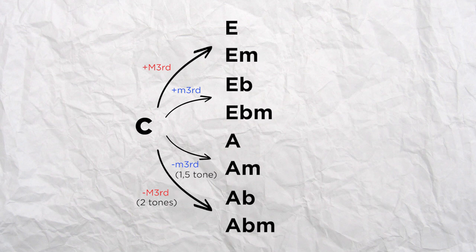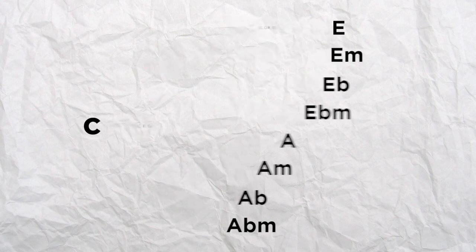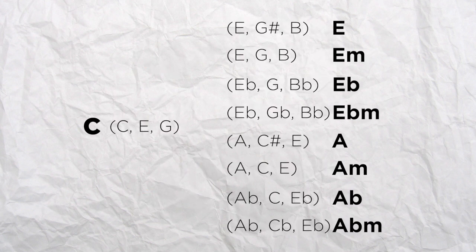Then any of these chords can be either a major chord or a minor chord, so that gives us 8 different possibilities. Now let's take a closer look and see how these chords are made and see how much they share with our C major chord.